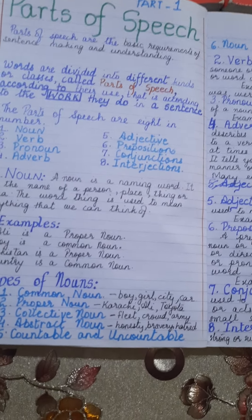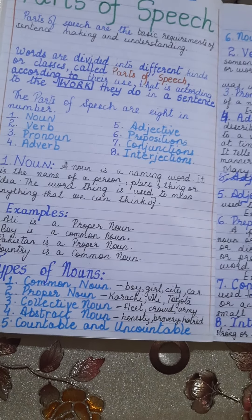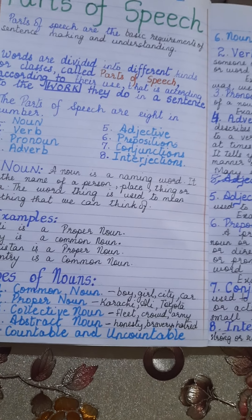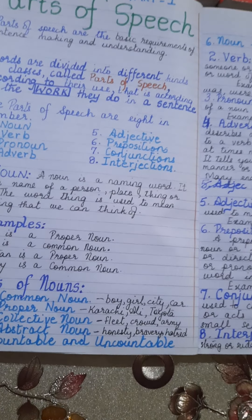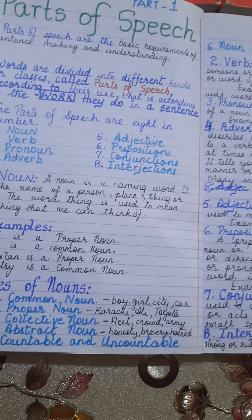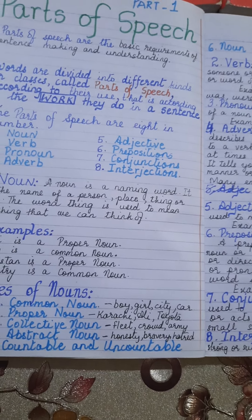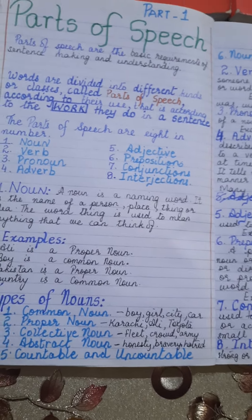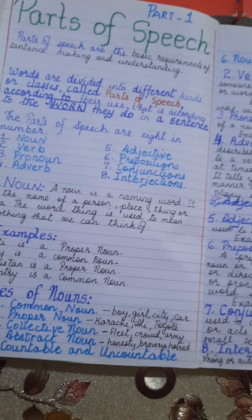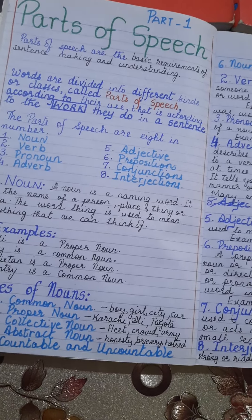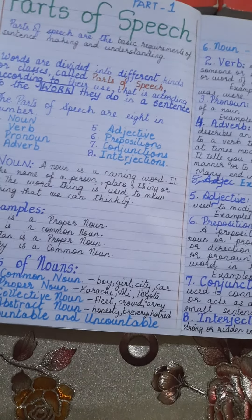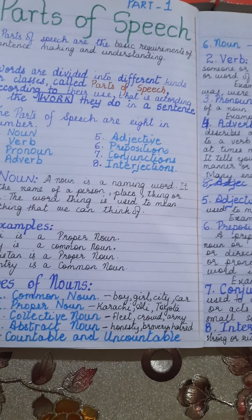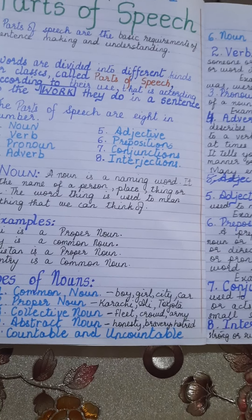We will discuss a few types of nouns. Common nouns: boy, girl, city, car. Proper nouns: Karachi, Ali, Toyota — any name that is definite. Collective noun: one word used for a group of people, things, or objects. For example, fleet, crowd, army — a fleet of ships, a crowd of people, an army of men. Abstract nouns are nouns that cannot be touched; they do not have any physical appearance but can only be felt — for example, honesty, bravery, hatred. There are also countable and uncountable nouns.